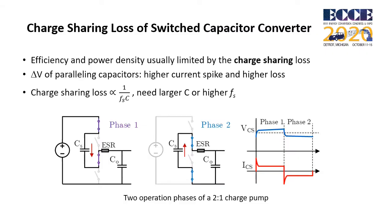The efficiency and power density of a switch capacitor converter are usually limited by the charge sharing loss. Charge sharing loss comes from the voltage difference between two parallel capacitors, such as CES and CO. The voltage difference is directly applied on the parasitic resistance and the on-resistance of switches, resulting in higher current spikes and higher conduction loss. Increasing the capacitance and the switching frequency can reduce the charge sharing loss, but also makes the converter bigger and introduces higher switching loss.